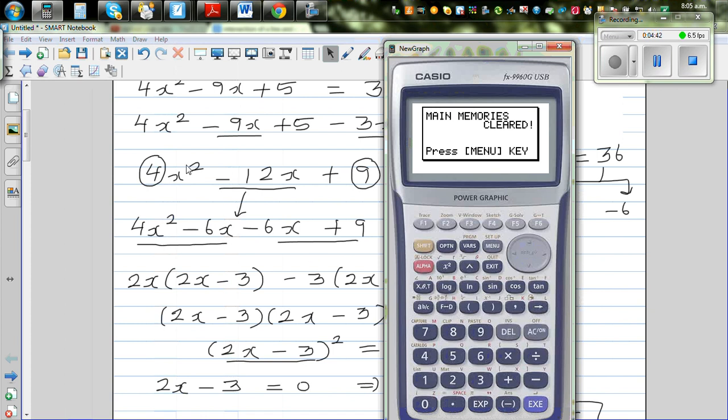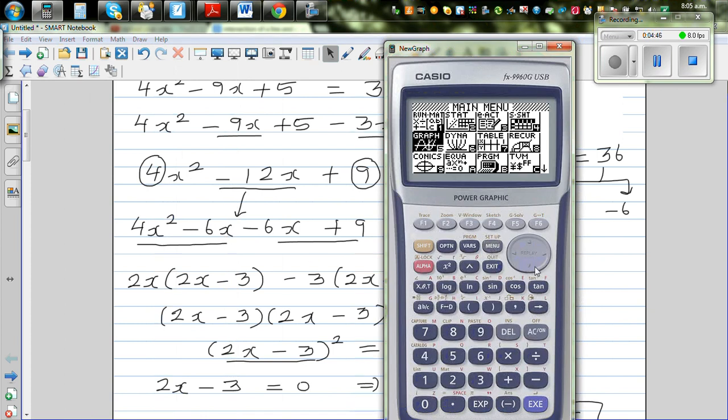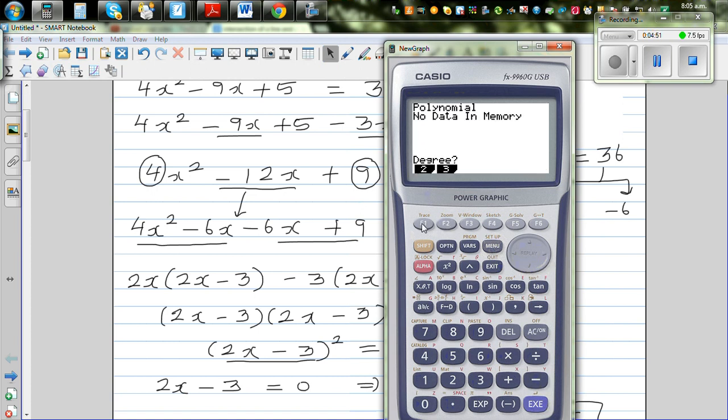We'll solve this equation. We're talking about this equation. Go to graph or go to equation first. Go to polynomial and second degree. The coefficient a is the coefficient of x squared, so you type in 4 there. Execute, negative 12 and plus 9. Then you go to solve. You get 3 over 2, which is 1.5 twice.